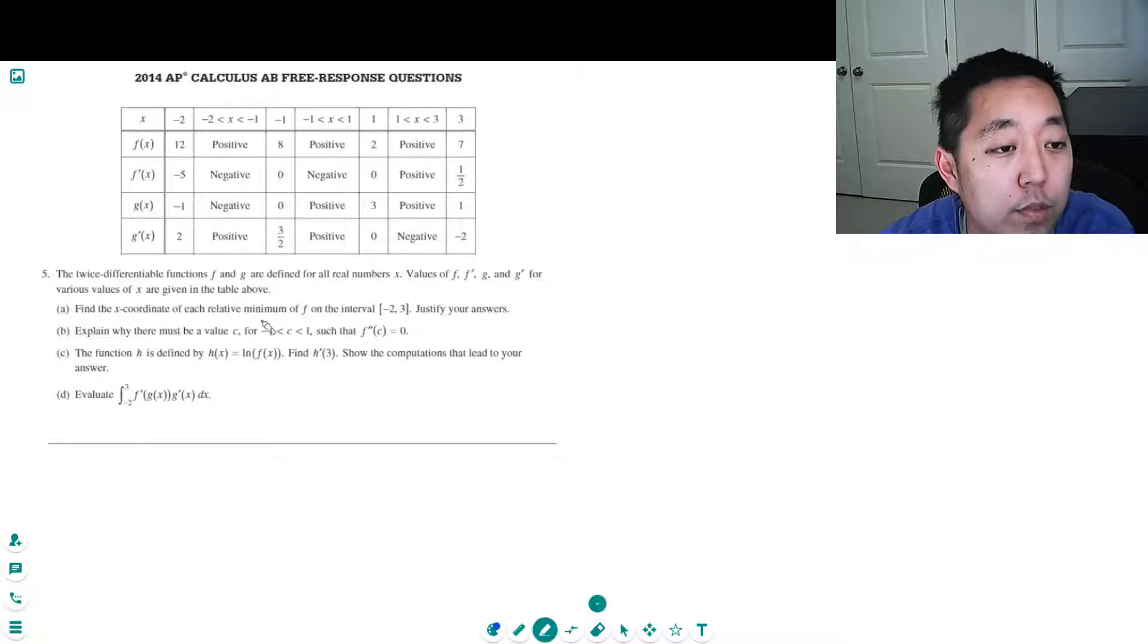X coordinate of each relative minimum. Okay, so they got f, f prime. The critical numbers are negative one and one. The minimums are where the slope goes from negative to positive.